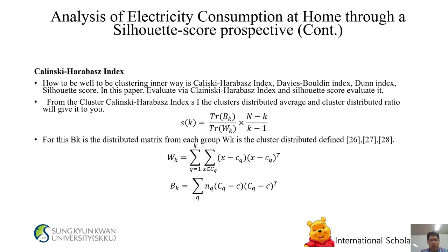Analysis continued: How to evaluate clustering? Options include the Calinski-Harabasz Index, Davies-Bouldin Index, Dunn Index, and Silhouette Score. This paper evaluates via the Calinski-Harabasz Index and Silhouette Score. The Calinski-Harabasz Index measures a cluster's distributed average relative to the inter-cluster distribution. BK is the distributed matrix from each group; WK is the intra-cluster distributed matrix defined for each cluster.